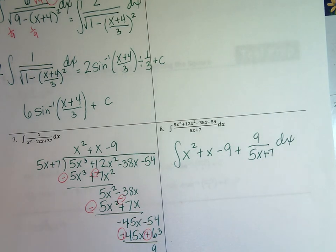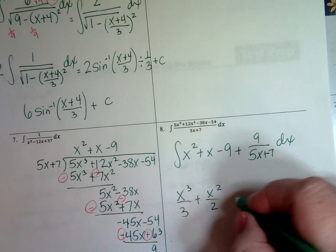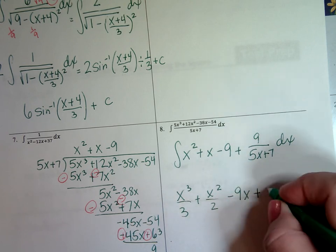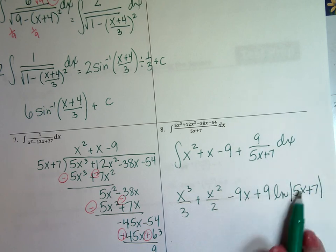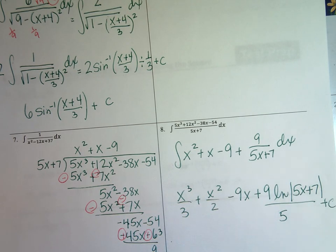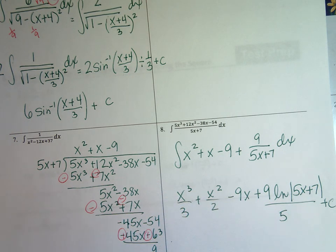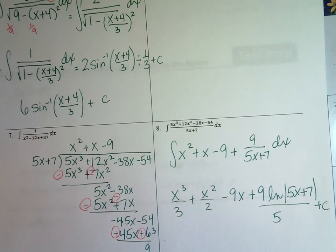Integrating each piece: raise the power and divide — x cubed over 3 plus x squared over 2 minus 9x, and then the ln piece: 9 ln of (5x plus 7) over 5 (dividing by the coefficient on x), plus C. And that's it — those were the only problems in this section. A little flavor of completing the square, a little flavor of synthetic and long division, and how they make it so much easier to find your integral. Shoot me any emails if you have questions and I'll see you in class.